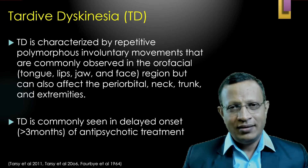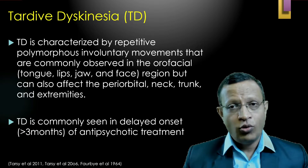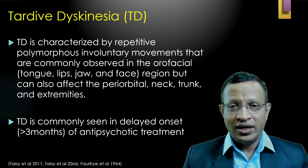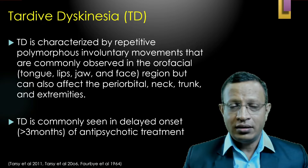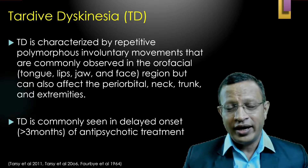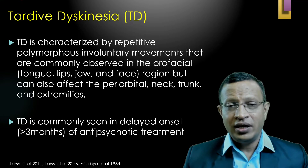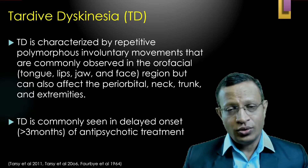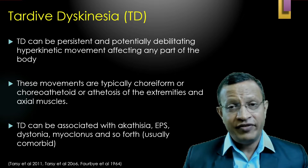This Abnormal Involuntary Movement Scale is used to assess tardive dyskinesia. What is tardive dyskinesia? It is repetitive polymorphous involuntary movements that are commonly observed in the orofacial region — that is tongue, lips, jaw and facial region — but it can also occur in the periorbital area, neck, trunk and extremities after exposure to antipsychotics or D2 receptor blocking agents. TD is commonly delayed onset, that is after three months, but acute onset parkinsonism, dystonia, and akathisia are also seen. This Abnormal Involuntary Movement Scale is used for both acute and delayed onset. TD can be persistent and potentially debilitating hyperkinetic movements affecting any part of the body.